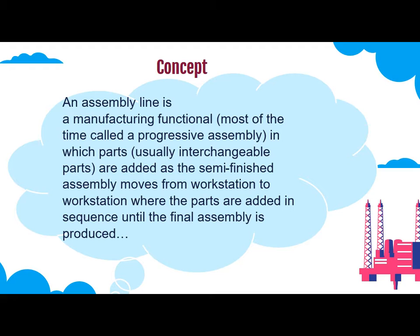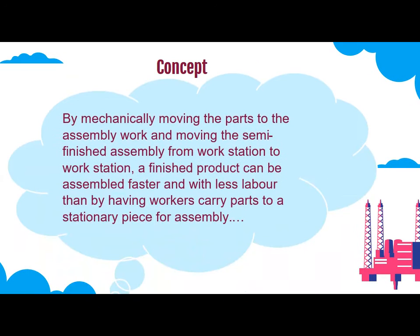An assembly line is a manufacturing function, most often called progressive assembly, in which parts — usually interchangeable parts — are added as the semi-finished assembly moves from workstation to workstation, where the parts are added in sequence until the finished assembly is produced by mechanically moving the parts to the assembly work.